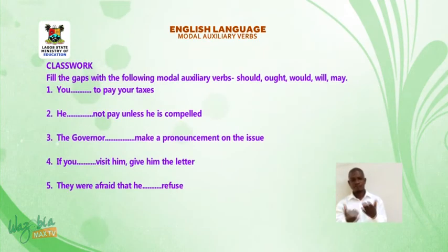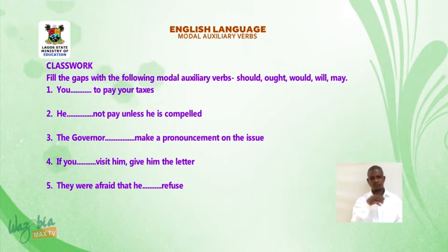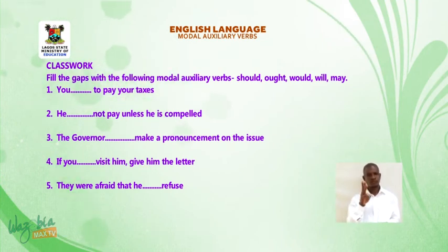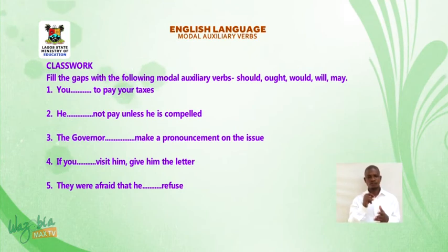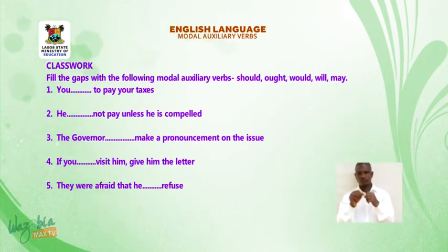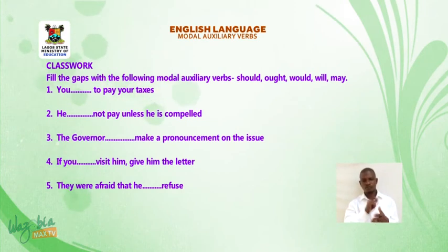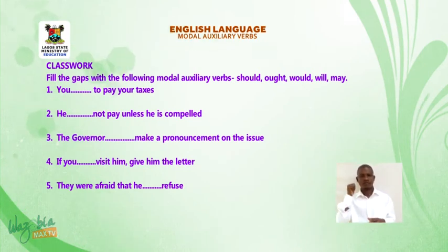Now take this as your classwork. Fill the gaps with the following modal auxiliary verbs: should, ought, would, will, may. Number one: you dash to pay your taxes. Two: he dash not pay unless he is compelled. Three: the governor dash make a pronouncement on the issue. Four: if you dash visit him, give him the letter. Five: they were afraid that he dash refused.